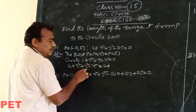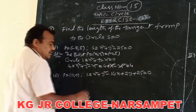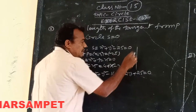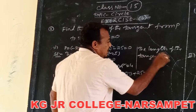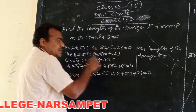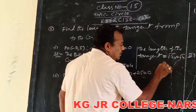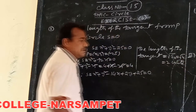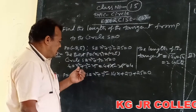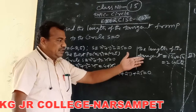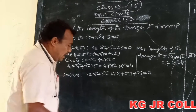x₁² = (-2)² = 4. y₁² = 5² = 25. So 4 + 25 - 25, the 25s cancel, S₁₁ = 4. The length of the tangent is root S₁₁ = root 4 = 2. So the length of the tangent drawn from the given point to the circle is 2 units.